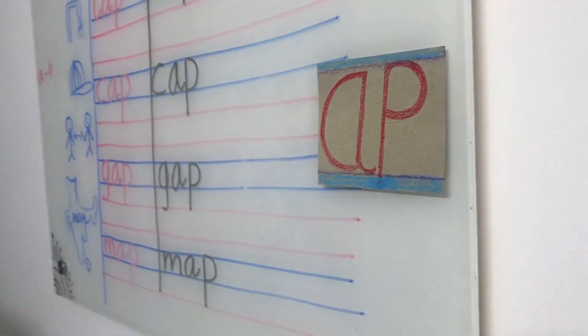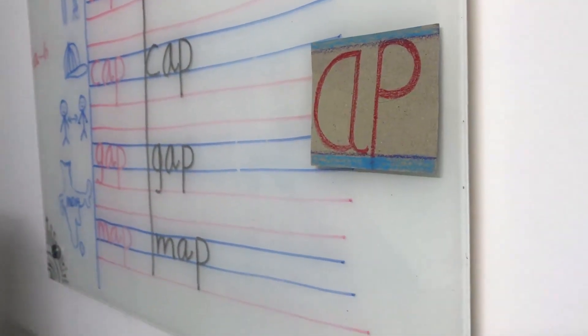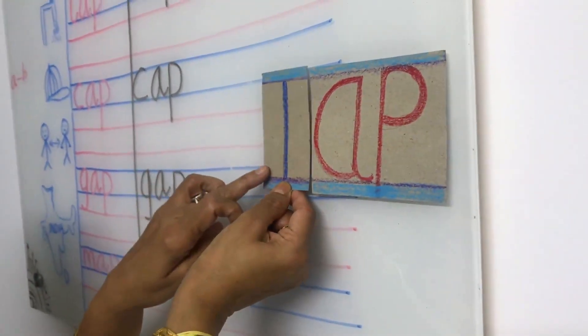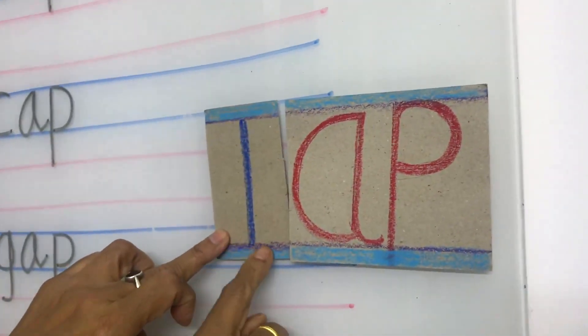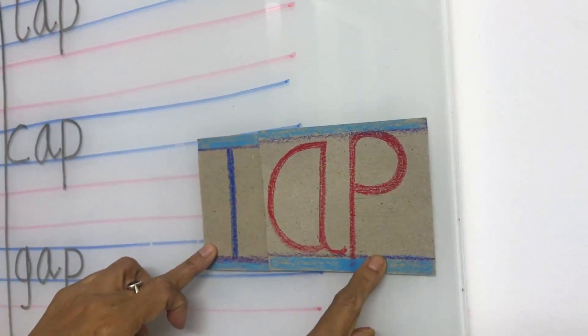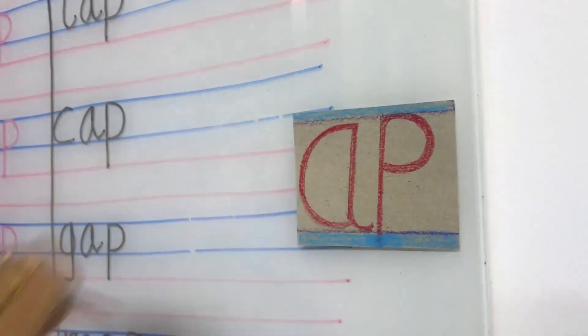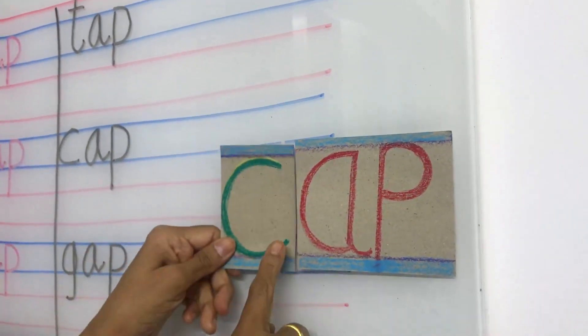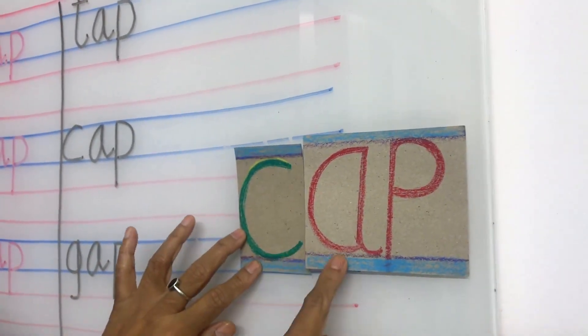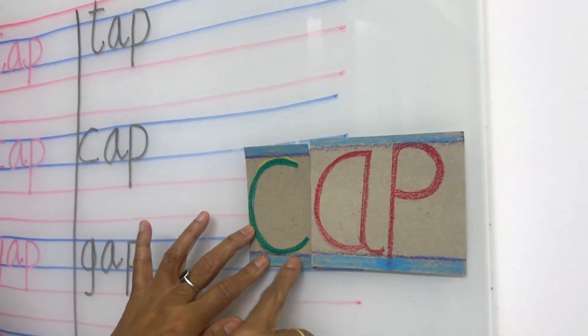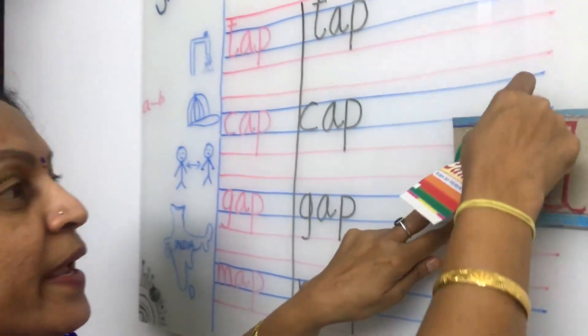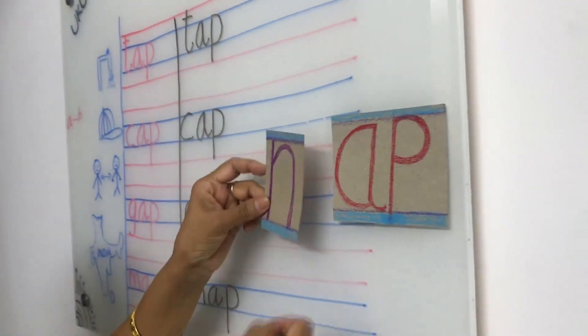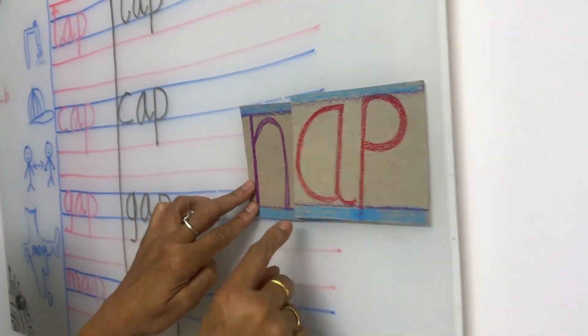And this is L. So, L, A, P, LAP. See this. This is C. When you join C letter to AP, it will become C, A, P, CAP. This is N, A, P, NAP.